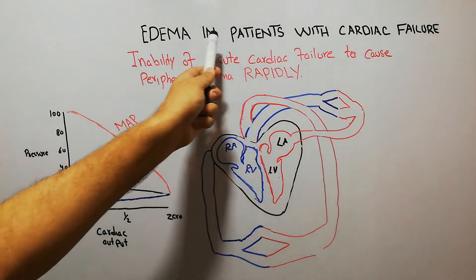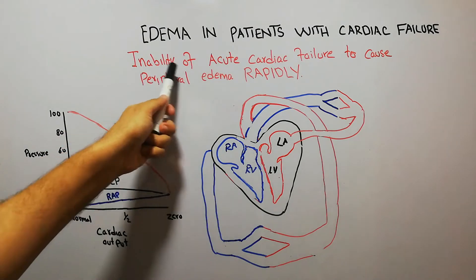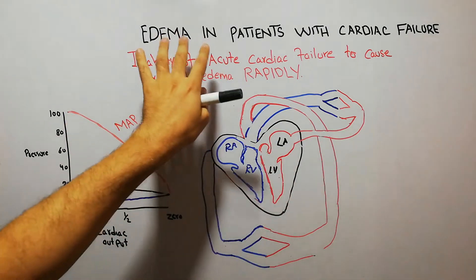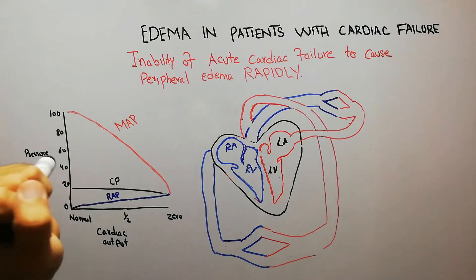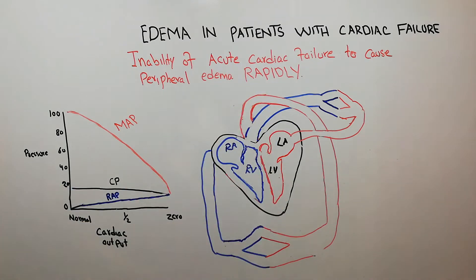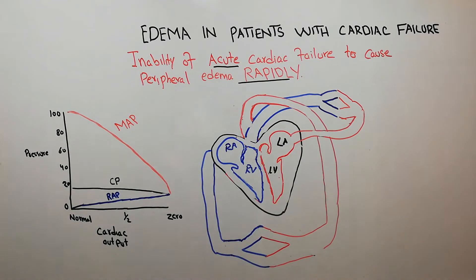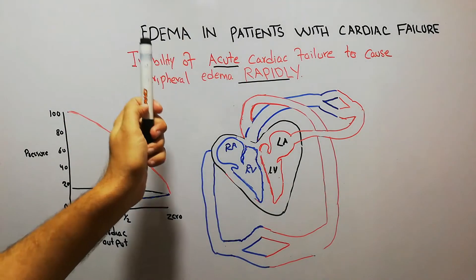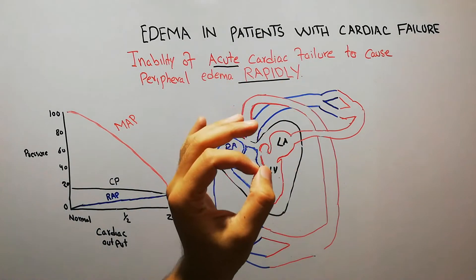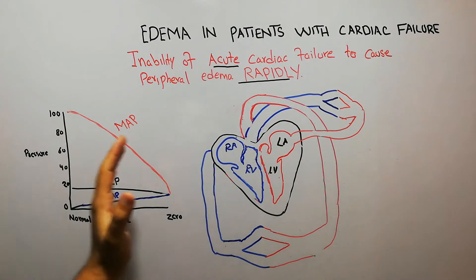Today we are going to talk about edema in patients with cardiac failure. The first topic is the inability of acute cardiac failure to cause peripheral edema rapidly. There are two key words: 'acute failure' and 'rapidly.' This means that even in acute failure, peripheral edema does occur, but it will not occur rapidly. We will first revise the cardiac circuit, then explain the formation of edema.